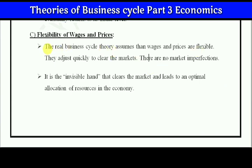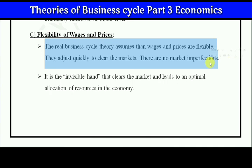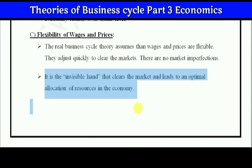Flexibility of wages and prices: the real business cycle theory assumes that wages and prices are flexible — they are not static or fixed. Wages and prices adjust quickly to clear the market. There are no market imperfections. It is the invisible hand that clears the market and leads to an optimal allocation of resources in the economy. So RBC supports Adam Smith's invisible hand theory.